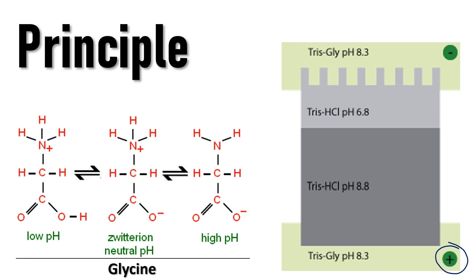The gel is buffered with Tris-HCl. In Tris-HCl, the chloride ions move very quickly towards the cathode in the electric field and migrate much ahead of the glycine molecules. The separation of chloride ions from the Tris counter-ions creates a narrow zone with a steep voltage gradient that pulls glycine molecules along behind it. Thus two layers of ions are formed: highly mobile chloride ions followed by the slower glycine molecules.